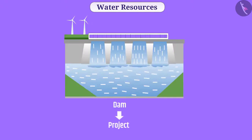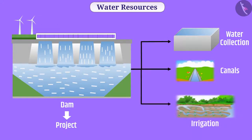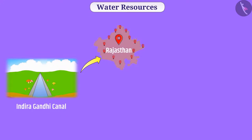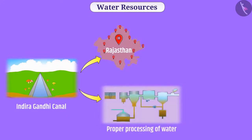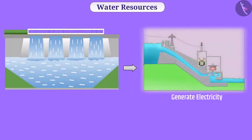Dams are important projects for water conservation. There are many benefits of building a large dam — a sufficient amount of water can be stored in them. Water can be carried away with the help of canals and used for irrigation. For example, with the help of the Indira Gandhi Canal, water has been transported to many places in Rajasthan. After proper processing, water is transported to cities via pipelines, and dam water is also used to generate electricity.